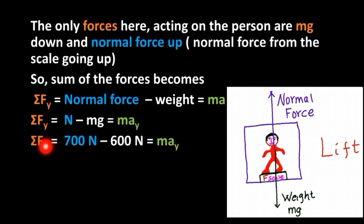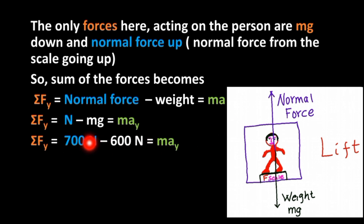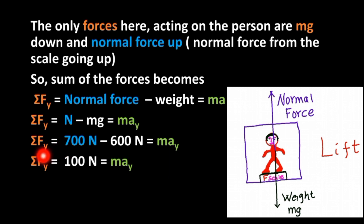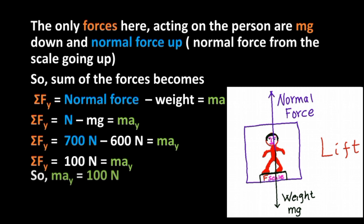The sum of forces in the y direction is equal to normal force 700 Newton minus mass times gravity 600 Newton, which is equal to mass times acceleration. So the sum of forces on the y-axis equals 100 Newton, which equals mass times acceleration.